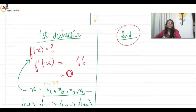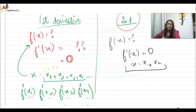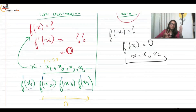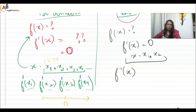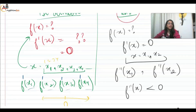Now for the second derivative method: I have some function f(x). I take its first derivative, set it equal to zero, and find the values of x. Then I find the second derivative f''(x) and insert the values x1, x2, etc. into it. If f''(x1) is negative, that point is a maxima. If f''(x) comes out to be positive, that is a minima. If f''(x) equals zero, it is neither maxima nor minima.